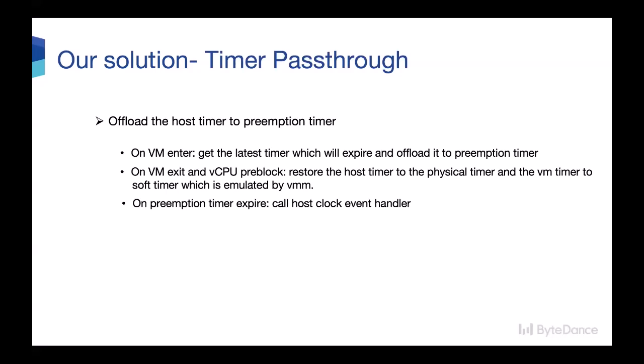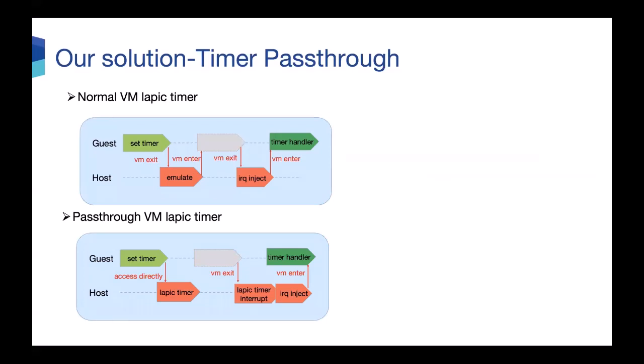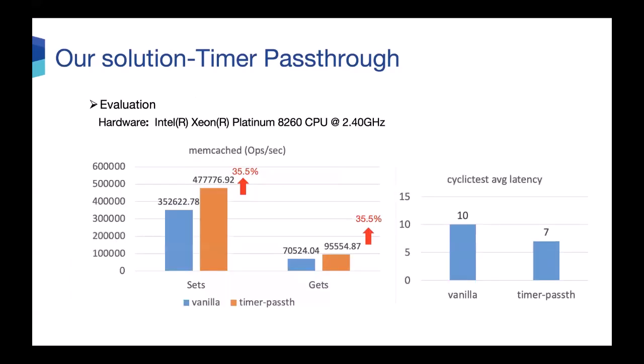When the preemption timer fires, it indicates that the host clock event will be called. This slide shows the difference between normal VM LAPIC timer and VM pass-through timer. The performance test result shows that the throughput of set, test, and get operations of memcached increased 35.5% after adopting our pass-through timer.